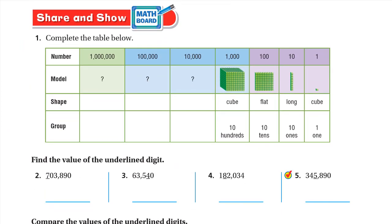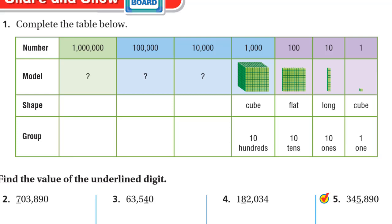Now for share and show, complete the table. We have: 1 (cube, one 1), 10 (long, ten ones), 100 (flat, ten tens), 1,000 (cube, ten hundreds). The pattern is cube, long, flat, cube, then long again. So the next one is ten thousands — 10 times as much as the previous one.